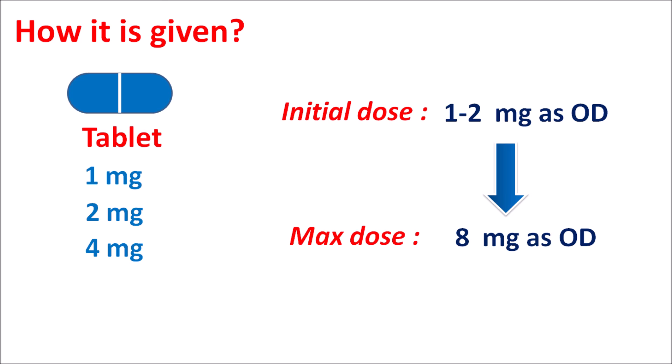In summary, glimepiride is a second generation sulfonylurea that acts on sulfonylurea receptors, which block ATP-sensitive potassium channels, resulting in depolarization and release of insulin. Since this drug increases the release of insulin from the beta cells of the pancreas, it is indicated in patients with type 2 diabetes mellitus. Hypoglycemia is one of the important side effects, and any hypersensitivity developed towards glimepiride should be carefully checked.